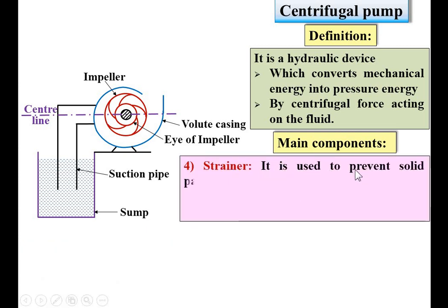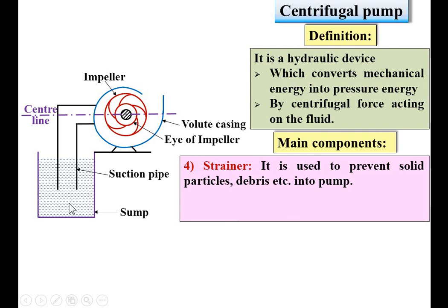Next component: strainer. It is used to prevent solid particles, debris, etc. from entering the pump. The strainer is at the lower end of the suction pipe to prevent debris and solid particles from passing from the sump to the pump. I am going to draw the strainer and give the name.